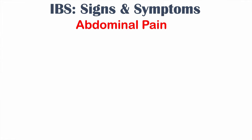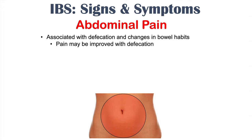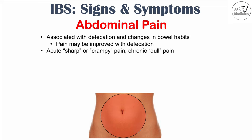Now let's talk about the signs and symptoms of IBS. One of the main symptoms is abdominal pain. This abdominal pain is associated with defecation and changes in bowel habits, and often this pain is improved with defecation. So when someone uses the washroom, this pain often gets better, although it is often not completely resolved. It is described as a sharp or crampy pain, although individuals will often have a chronic dull background pain with certain episodes of sharp or crampy pain.